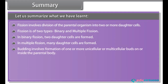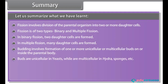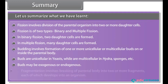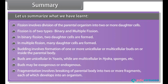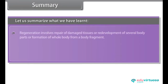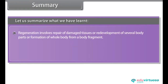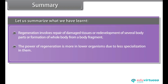Budding involves the formation of one or more unicellular or multicellular buds on or inside the parental body. Buds are unicellular in yeasts while multicellular in hydra, sponges, etc. Buds may be exogenous or endogenous. Fragmentation involves breaking of the parental body into two or more fragments, each of which develops into an organism. Regeneration involves repair of damaged tissues, redevelopment of lost body parts, or formation of a whole body from a body fragment. The power of regeneration is greater in lower organisms due to less specialization in them.